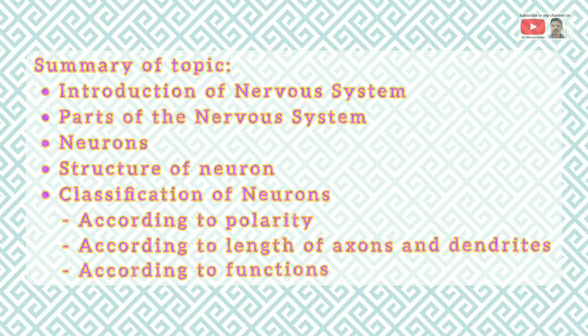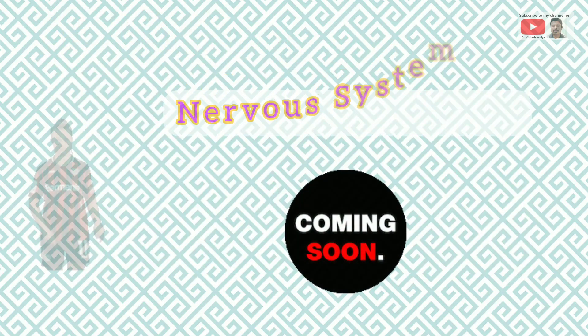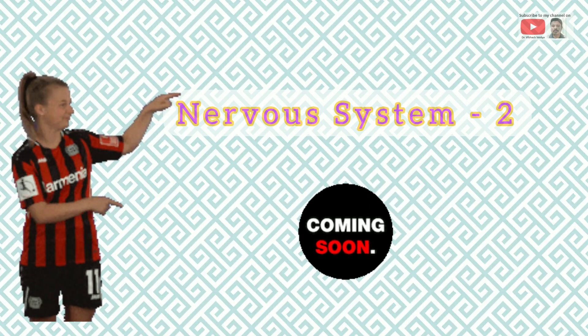In this video we have covered the introduction of the nervous system, the parts of the nervous system, the neuron, structure of neurons, and classification of neurons according to polarity, according to length of axons and dendrites, and according to function. The rest of the topic will be covered in our next video on the nervous system, Lecture 2.